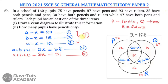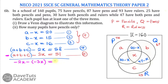Subtracting equation 5 from equation 4: A plus B plus C cancels out. Minus 2X minus minus 3X gives minus 2X plus 3X, which equals X. And 58 minus 51 equals 7. So X equals 7. The number of pupils that have pencils, pens, and rulers — all three items — is 7.